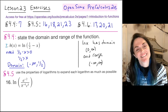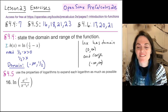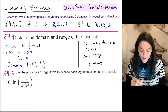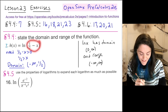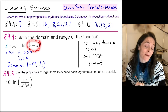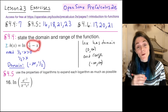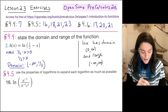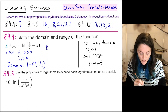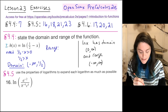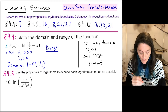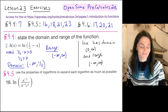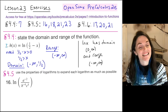Both sides are open. Now think about the range. As x ranges over (−∞, 1/2), we fill out the full range of the natural log. So the range of this function will be all real numbers, which is (−∞, ∞).